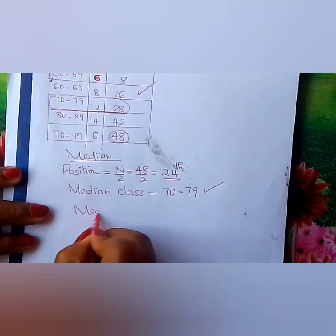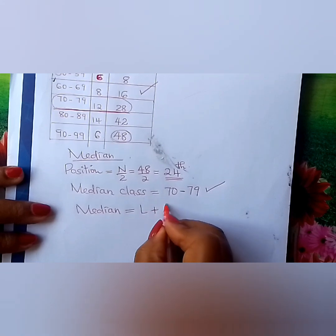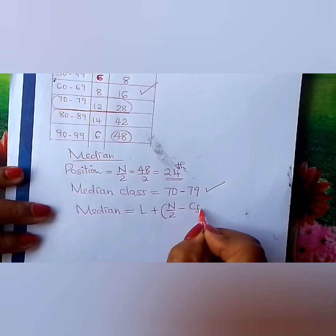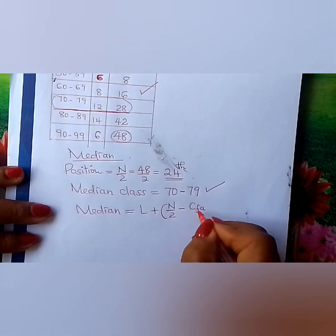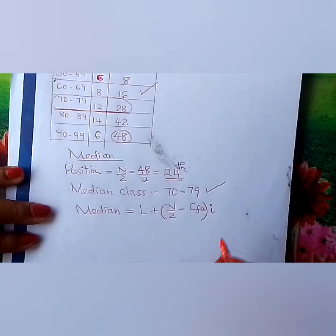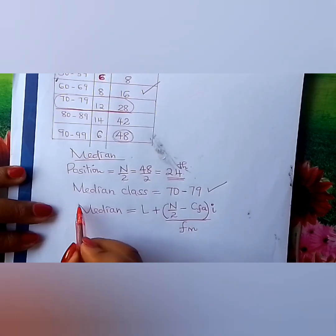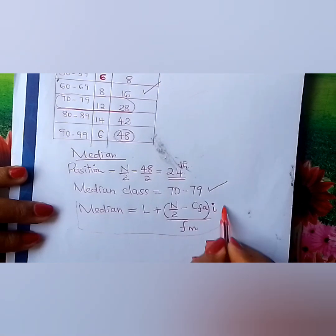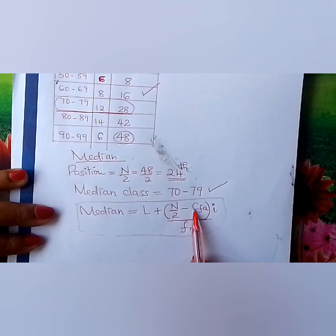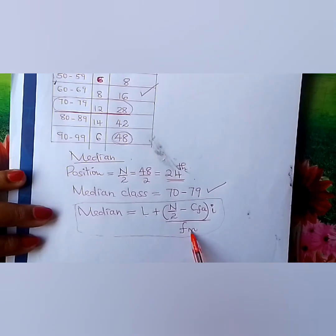Things now become easy. The median is given by the formula: lower class boundary plus, in brackets, N over 2 minus cumulative frequency just above the median class (CFA), divided by the frequency of the median class, all multiplied by I, the class interval or class width.